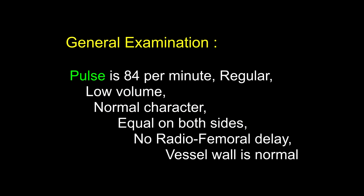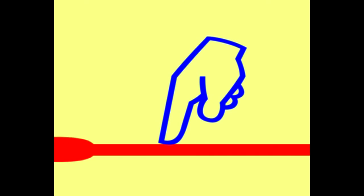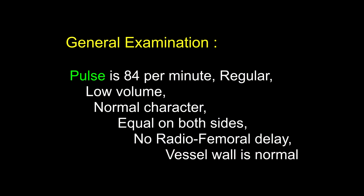The pulse is 84 per minute, regular, low volume, normal character, equal on both sides, no radiofemoral delay, vessel wall is normal. Pulse is a pressure wave produced by cardiac systole which advances through the arterial tree in a peripheral direction. How was the pulse palpated? First, the radial artery at the wrist was palpated to note rate, rhythm, character, and condition of the vessel wall. Then both radial arteries were palpated simultaneously to detect inequality, and finally the femoral artery was felt simultaneously to detect any radiofemoral delay. Radiofemoral delay is seen in coarctation of aorta, and also in aortitis, dissecting aneurysm of aorta, and block at the bifurcation of aorta.